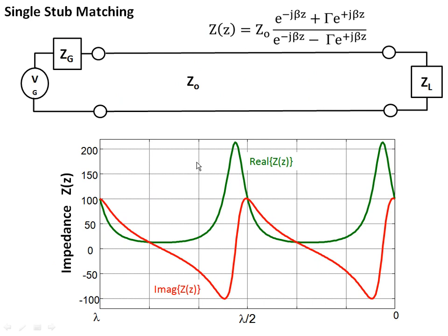So, I've chosen a case here where I've mismatched a load to a line. I've chosen for the data you see here an impedance of 50 ohms and a load impedance of 100 plus j100 ohms. So, that's a pretty bad mismatch. We know in this case that the impedance as we move from the load back down the line is given by this equation right here, and we see it's essentially determined by the reflection coefficient, and we know it's complex.